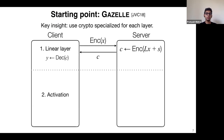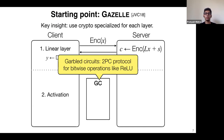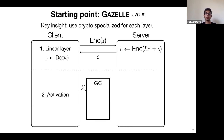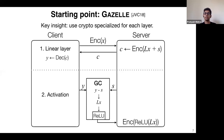To compute the nonlinear layer, Gazelle uses garbled circuits, which are very efficient for bitwise operations like ReLU. The garbled circuit takes input y and the server's mask S, undoes the mask to obtain Lx, applies the ReLU, and then a post-processing step outputs a fresh ciphertext containing ReLU(Lx). This is used to evaluate the next linear layer, and these two steps are repeated until you reach the end of the network.